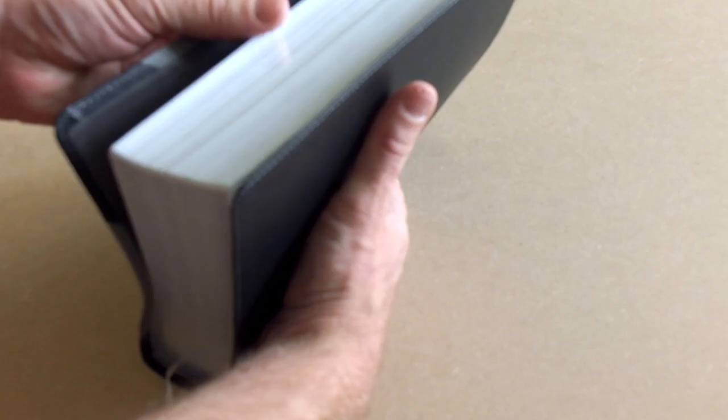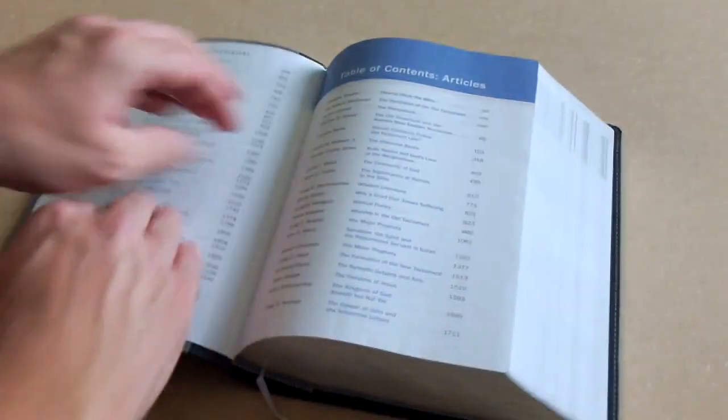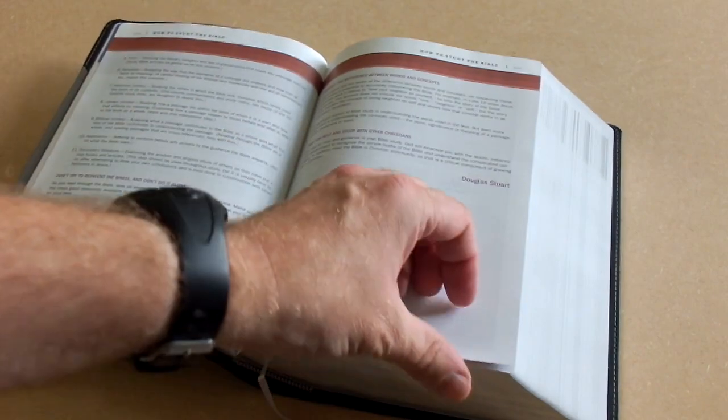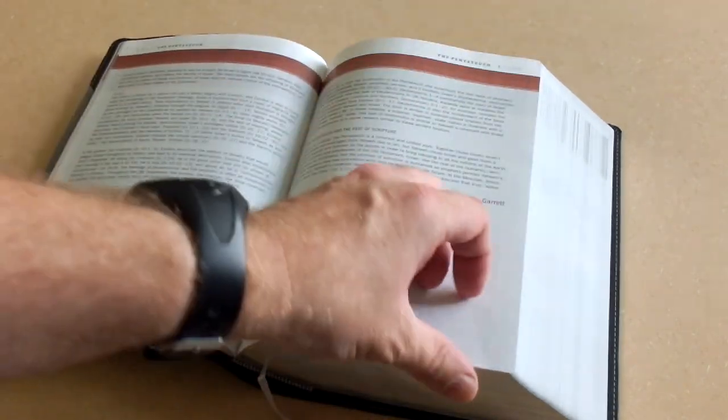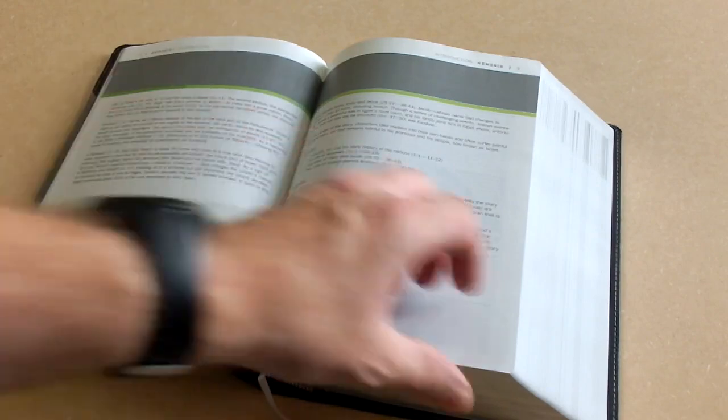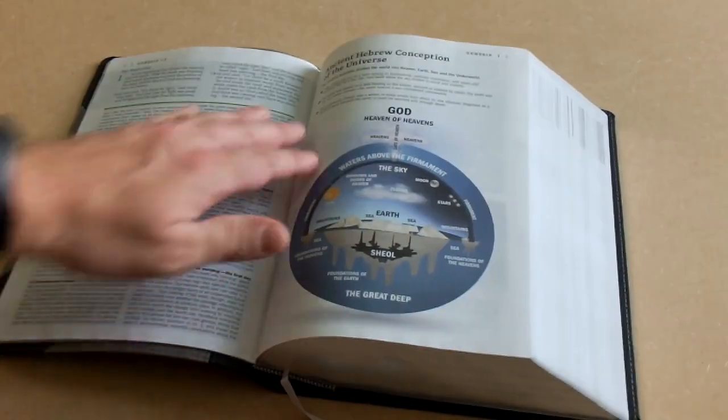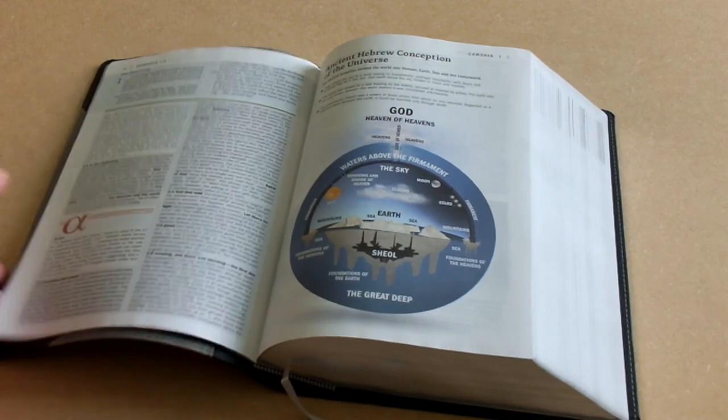Like I say, you can open it up in Genesis and it stays open. So you've got a few bits of weight of paper to keep it open, but Genesis one one, no problems at all.